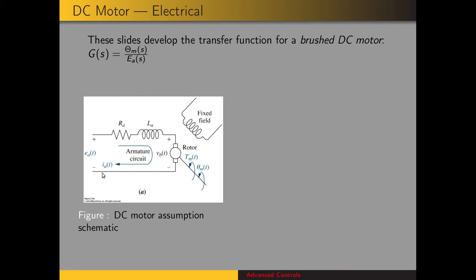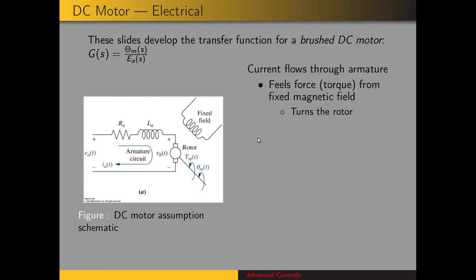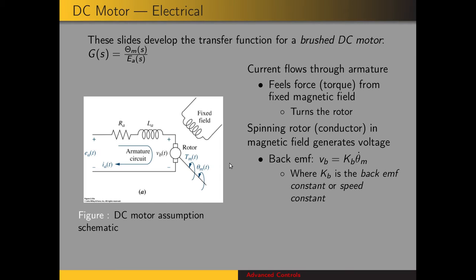The armature circuit has resistance, inductance, and a back EMF. The motor operates by current flowing through the armature, which induces a magnetic field that interacts with the stator's magnetic field, generating a torque that turns the rotor. When the rotor turns, a conductor moves in a magnetic field and a voltage is generated. This is called the back EMF because it opposes the motion of the motor and the applied voltage at the armature.